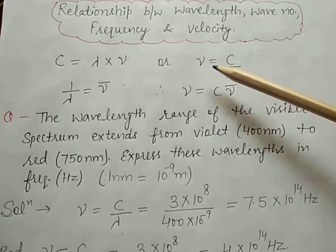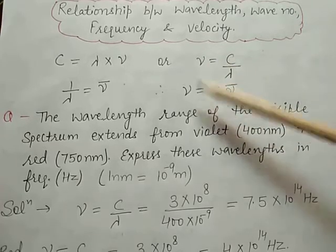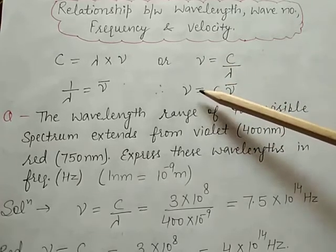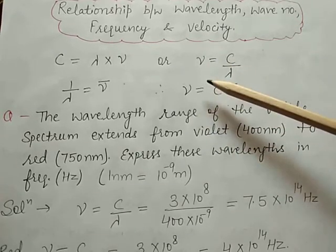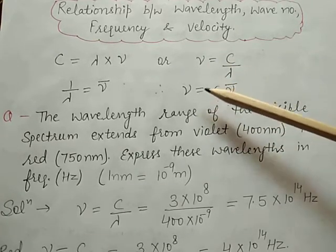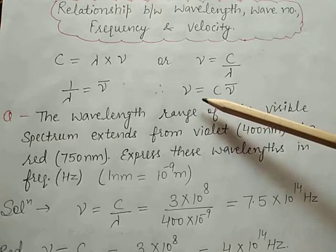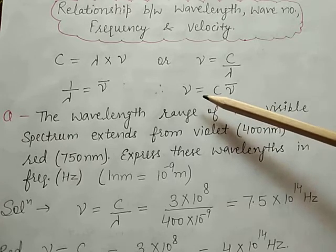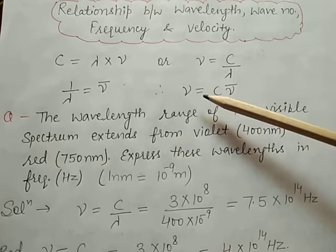So these are the relationships between lambda, mu, mu bar, and velocity C.